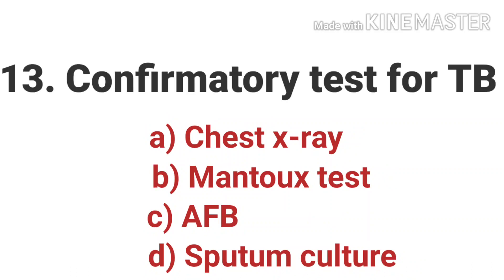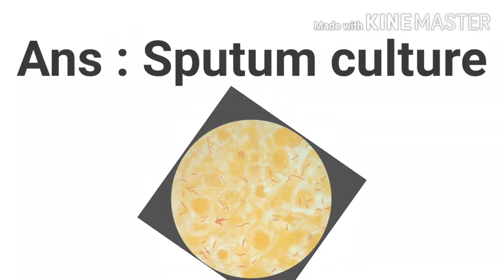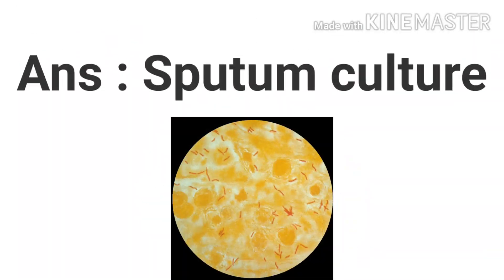The thirteenth question is: what is the confirmatory test for TB? Options are Chest X-ray, Mantoux test, AFB, and Sputum culture. The answer is Sputum culture. A sputum culture is a test to find germs that can cause infection. A sample of sputum is added to a substance that promotes the growth of bacteria. If no bacteria grow, the culture is negative.